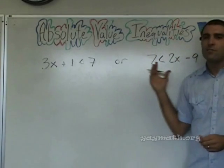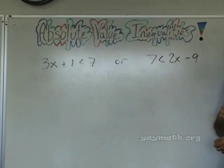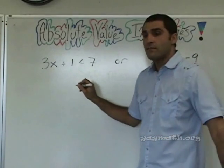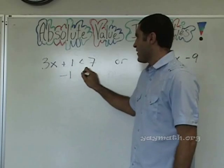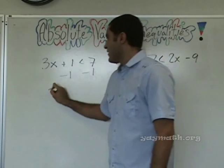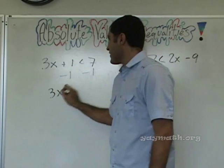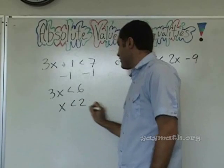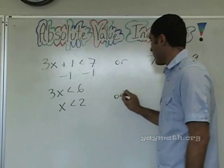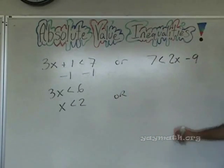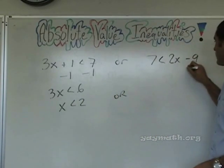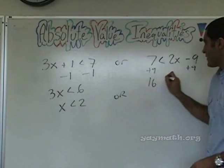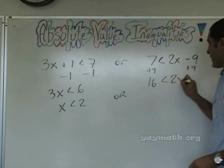Treat this like two different statements and solve. I'll race you, but don't be careless. Minus 1: 3x less than 6, x less than 2. Or: plus 9, plus 9 gives 16 less than 2x.